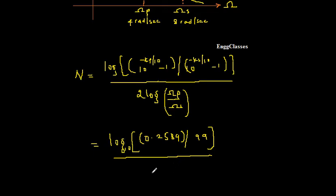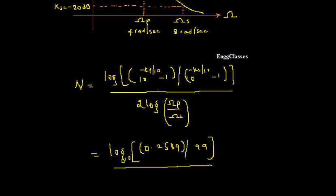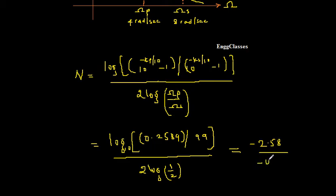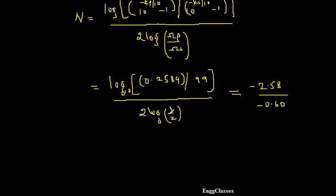In the denominator we have 2 log of omega p by omega s. Omega p is 4 and omega s is 8, so 4 by 8 is 1 by 2. So it is 2 log of 1 by 2. Using a calculator, at the numerator I get log(0.2589/99) giving minus 2.508, divided by 2 log(1/2) which is minus 0.60. Solving that, the order of the filter n is equal to 4.289.